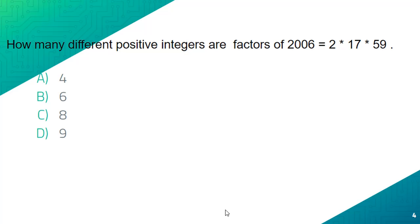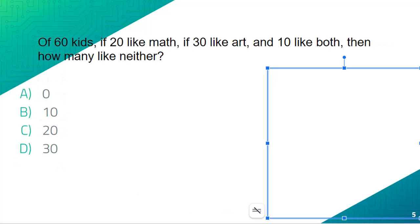Now this question: of 60 kids, if 20 like math, 30 like art, and 10 like both, then how many like neither? What we want to do is add 20 and 30, which gets you 50. Then we want to do 50 minus 10 because we have to take away the 10 that like both. That would be 40 kids. Now we want to do 60 minus 40 and we will get an answer of 20 kids that like neither. So our answer will be C.